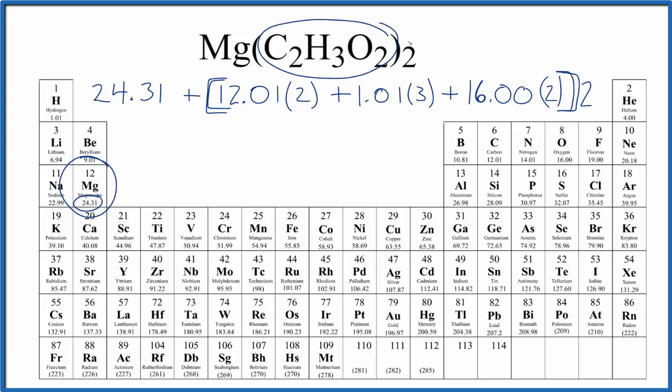The two here means we have two acetate ions. Inside the brackets, we have carbon—that's 12.01—two of those. Hydrogen is 1.01; we have three hydrogens. Oxygen is 16.00, and we have two of those.